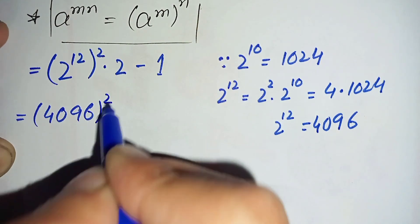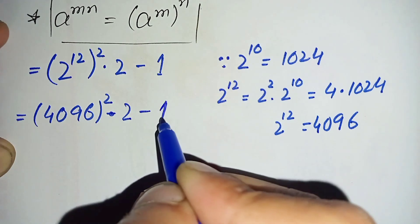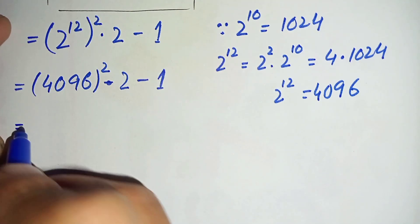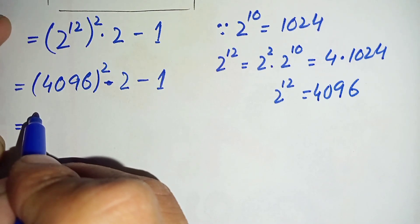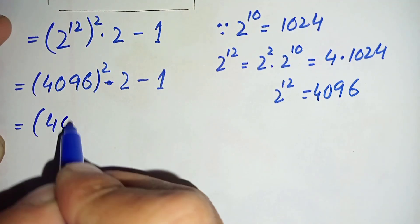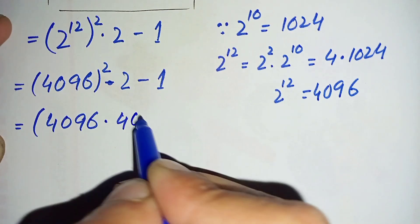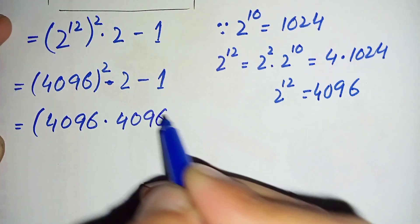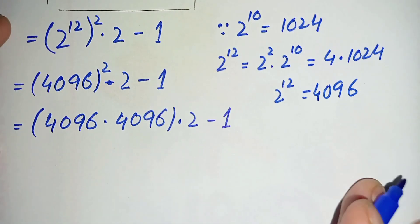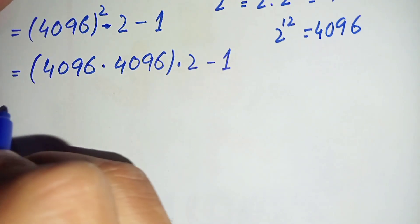So this becomes 4096 whole squared times 2 minus 1. We can write the square as 4096 times 4096, giving us 4096 times 4096 times 2 minus 1. Now we can further break these numbers as the sum of two parts.